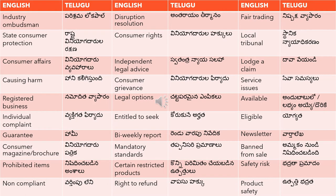'Right to refund' — you have the right to get a refund. For example, a certain amount has been debited but not credited to the merchant's account, hence you have a right to refund — 'vapasu hakku undi'. So 'vapasu hakku' means right to refund. 'Product safety' means 'utpatti bhadrata'.